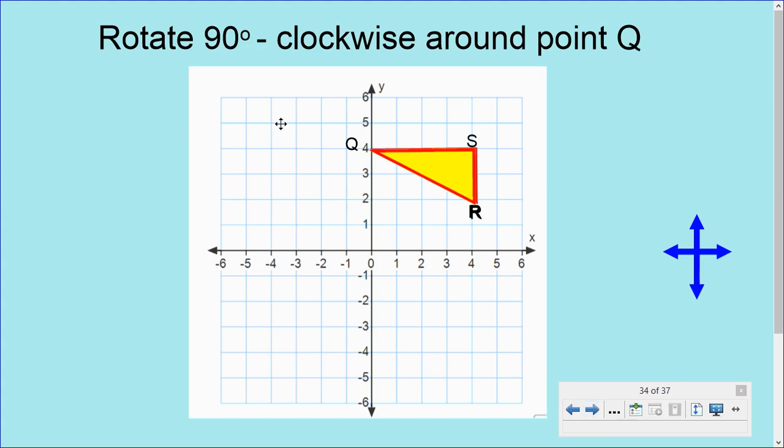Okay, let's rotate 90 degrees clockwise around point Q. Okay, we're at point Q again. Notice the distance from point Q to point S is 1, 2, 3, 4 boxes. So we're going to take point Q and make that our point of origin, 0, 0.